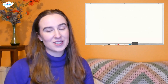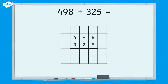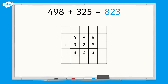We can use the inverse to check an answer. Let's complete a calculation so that we can use the inverse to check our answer. 498 add 325 equals 823.